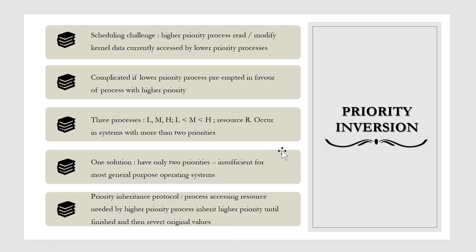In the example above, a priority inheritance protocol would allow process L to temporarily inherit the priority of process H, thereby preventing process M from preempting their execution. When process L has finished using resource R, it would relinquish its inherited priority from H and assume its original priority. Because resource R would now be available, process H and not M would run next.